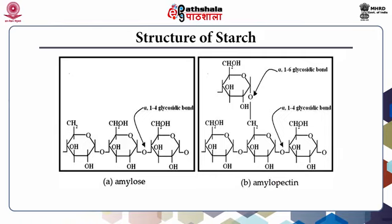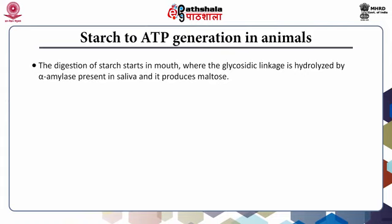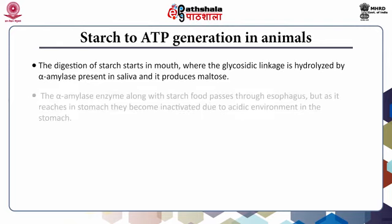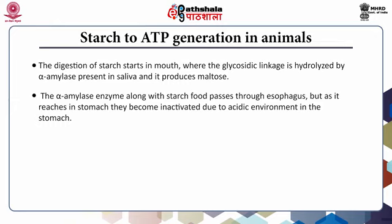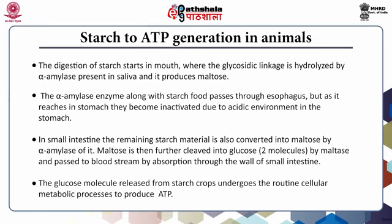Starch to ATP generation in animals: digestion of starch starts in the mouth where the glycosidic linkage is hydrolyzed by alpha-amylase present in saliva, producing maltose. The alpha-amylase enzyme along with starch food passes through the esophagus, but becomes inactivated due to the acidic environment in the stomach. In the small intestine, the remaining starch is also converted into maltose by alpha-amylase. Maltose is then cleaved into two glucose molecules by maltase and absorbed through the wall of the small intestine into the bloodstream, where glucose undergoes cellular metabolic processes to produce ATP.